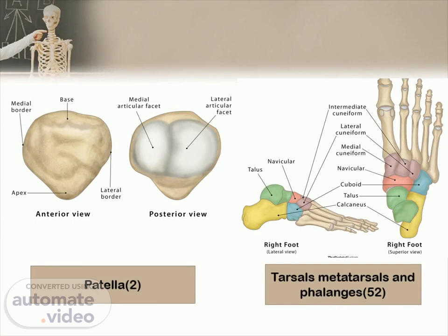The tarsus consists of seven bones that make up the posterior aspect of the foot: talus, calcaneus, cuboid, navicular, and three cuneiforms. The tarsal bones are divided into the hind foot — talus and calcaneus — and mid foot — cuboid and cuneiforms. The navicular is the intermediate bone between these two groups. The metatarsus of the foot consists of five long bones called the metatarsals. Like the metacarpals of the hand, the metatarsals are comprised of a proximal base, a shaft, and a distal head.